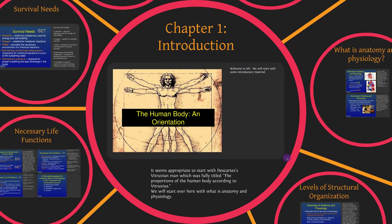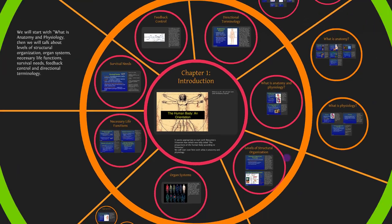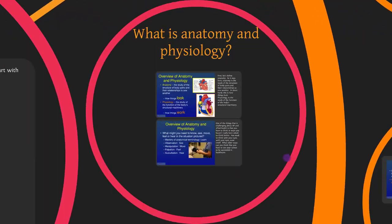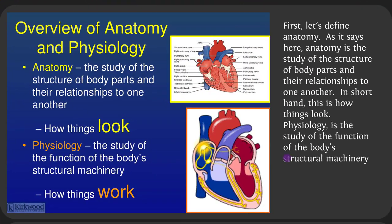It seems appropriate to start with the Vitruvian Man — fully titled 'The Proportions of the Human Body According to Vitruvius.' Anatomy is the study of the structure of body parts and their relationships to one another — in shorthand, how things look. Physiology is the study of the function of the body's structural machinery — how the body works.